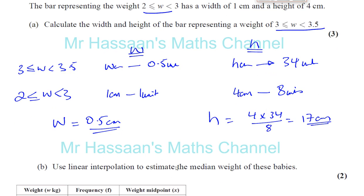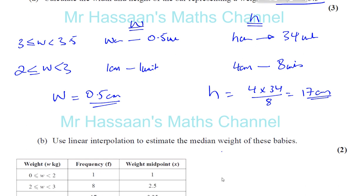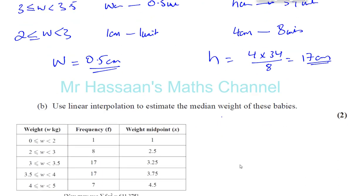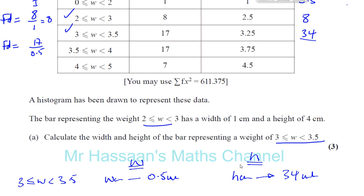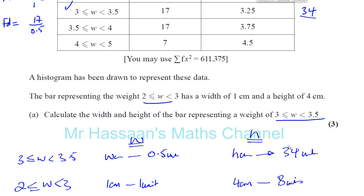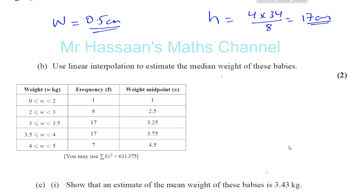So part B says, use linear interpolation to estimate the median weight of these babies. So we're going to find the median weight. So we know from the question that there are 50 babies born in the hospital. So the total of the frequency is 50. So the number of babies is 50.